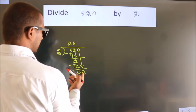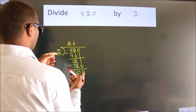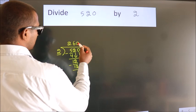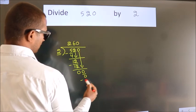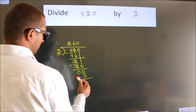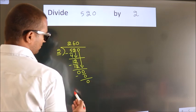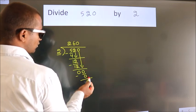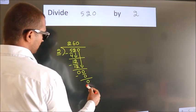When do we get 0? In 2 table, 2 times 0, 0. Now, we subtract. We get 0. No more numbers to bring it down. So, we stop here.